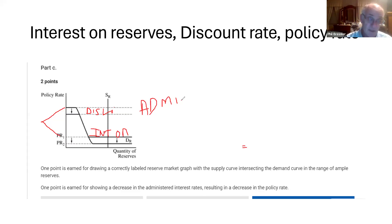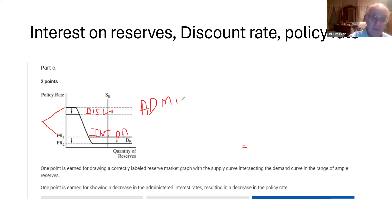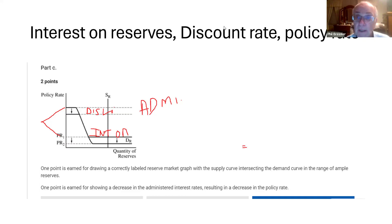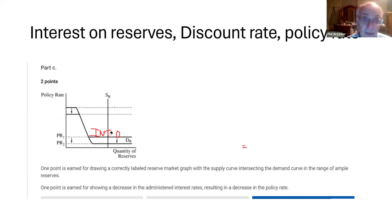If you increase interest rates, businesses and consumers are not going to want to borrow, investment goes down, AD left. So if you want to contract the economy, you want AD to go left — interest rates up. I think we all had a lot of problems on this, and I'm hoping we can knock a couple of these out and get them right.